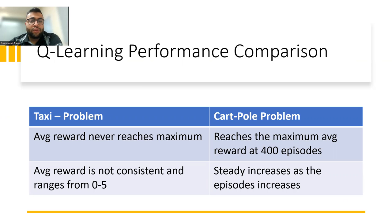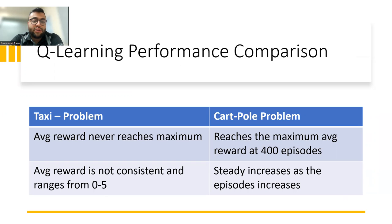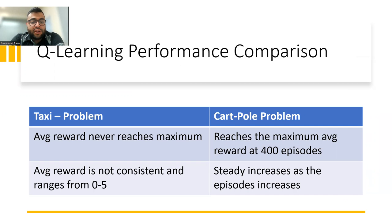Let's compare the Q-learning performance in both of the problems. In the taxi problem, the average reward never reaches the maximum — even at 5,000 episodes, it wasn't anywhere close to the maximum reward. In the cart-pole problem, it reaches the maximum average reward at around 400 episodes. The taxi problem's average reward is not consistent, ranging from 0 to 5, whereas in the cart-pole problem we see a steady increase in the average reward as the number of episodes increases.